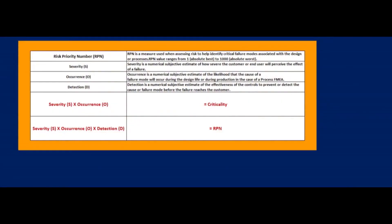Let us learn some basic concepts of the FMEA study process. Risk Priority Number (RPN) is a measure used when assessing risk to help identify critical failure modes associated with the design or processes. RPN values range from 1 (absolute best) to 1000 (absolute worst). Severity is a numerical subjective estimate of how severe the customer or end user will perceive the effect of a failure. Occurrence is a numerical subjective estimate of the likelihood that the cause of a failure mode will occur during the design life, or during production in the case of a process FMEA.